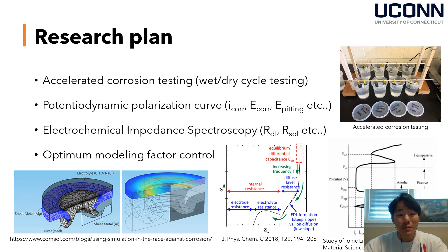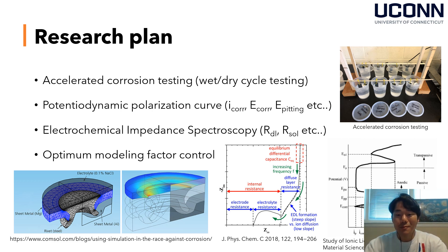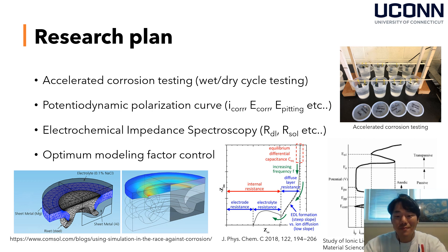To build a corrosion prediction model, I planned three steps of corrosion testing. First, I needed experimental data from actual samples, so I conducted accelerated corrosion testing, which is a well-known wet-dry cycle test. Second, I conducted potentiodynamic polarization testing to measure corrosion current and corrosion potential. Based on these results, I can calculate the corrosion rate of each steel. Lastly, I planned electrochemical impedance spectroscopy to observe the surface phenomena, which helps me understand corrosion layer and electrolyte resistance.